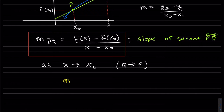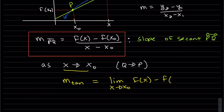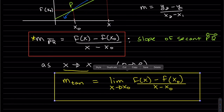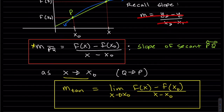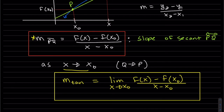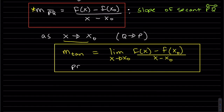So the slope of the tangent line at a point is equal to this limit as x approaches x-naught of the secant line. You don't have to memorize this so much — if you already know what a slope is, y2 minus y1, you do the slope of your secant and take the limit as x approaches x-naught. That gives you the slope of the tangent line. Without the limit, it's a secant line. This is provided the limit exists.